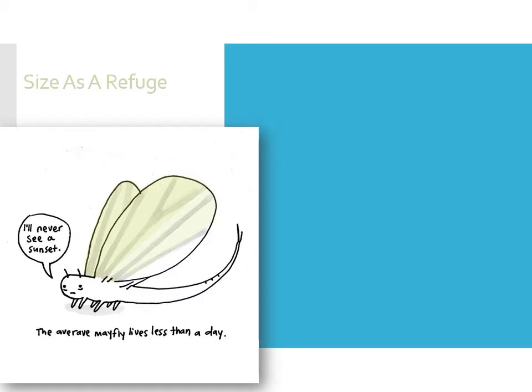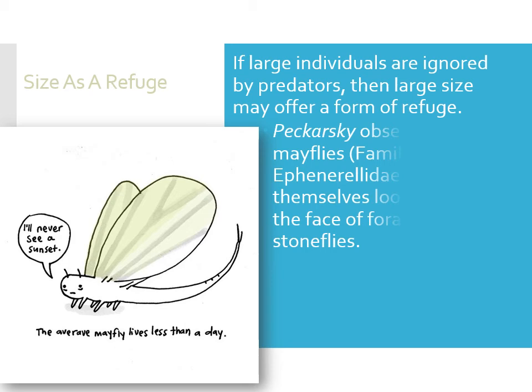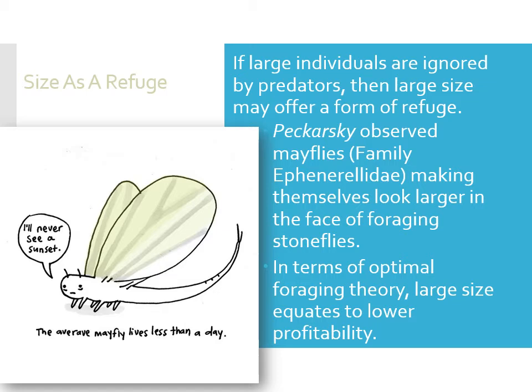Size could be a refuge. If you're little, you're obviously going to be more vulnerable. If you're really big, you're too scary to try to eat. So if large individuals are ignored by predators, then large size can be a form of refuge. Little tiny mayflies make themselves look big when a stonefly is coming to try to eat them. In terms of optimal foraging, the stonefly says that looks like too much energy to eat that giant thing — I want to go find something smaller. It seems like lower profitability to try to get something that's going to take so much energy.